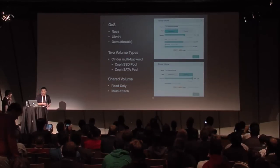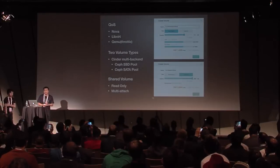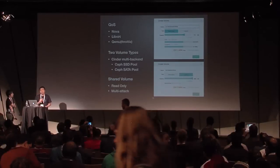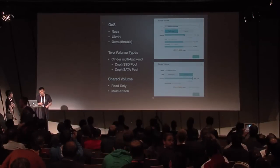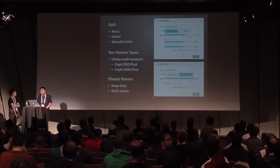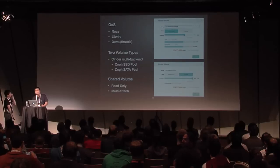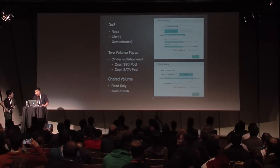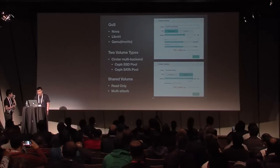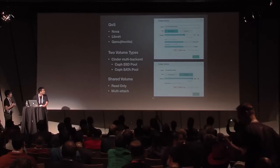QoS is very important for cloud multi-tenants. We backported the QoS feature into the 1.2 version. We use Cinder multi-backend to provide two volume types: the performance volume resides in the Ceph SSD pool, and the capacity volume resides in the SATA pool. We also use Cinder multi-attach to provide shared volumes.